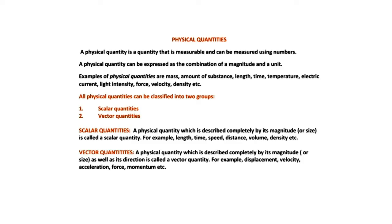Now let us discuss the next concept of this chapter, that is physical quantities. What are physical quantities? A quantity which can be measured is a physical quantity. For example, the length of a table is 4 meters — we can measure the length of the table, so length is a physical quantity. Physical quantities can be measured using numbers; 4 is a number.